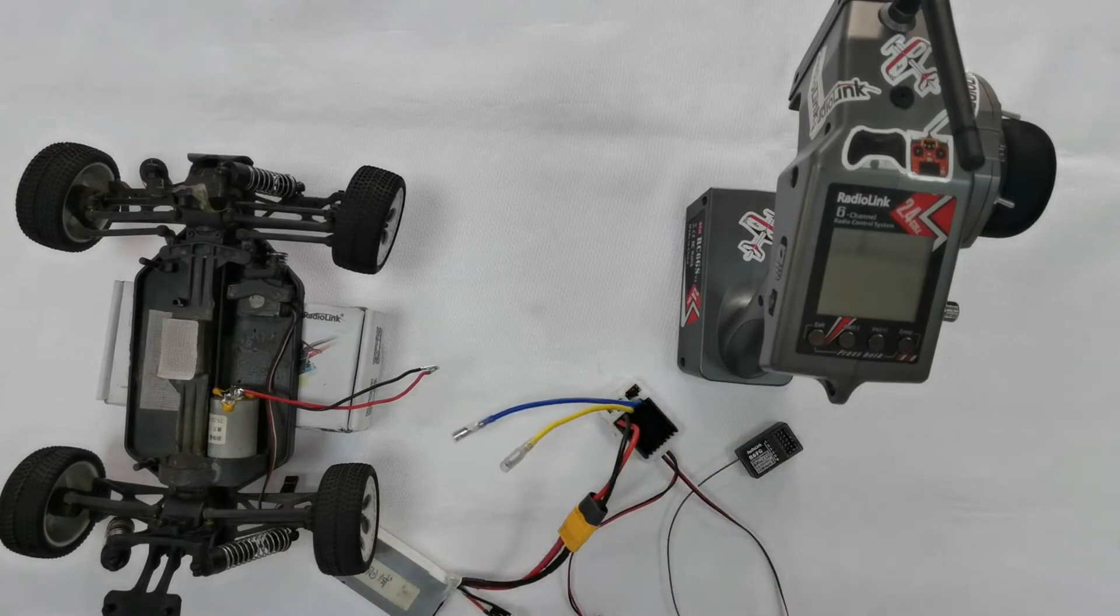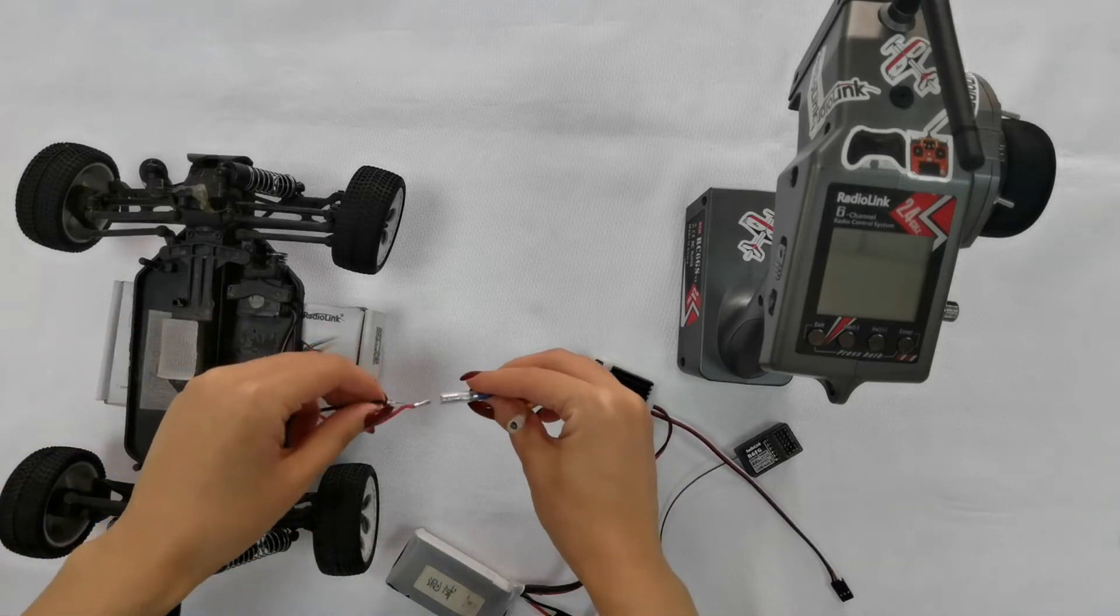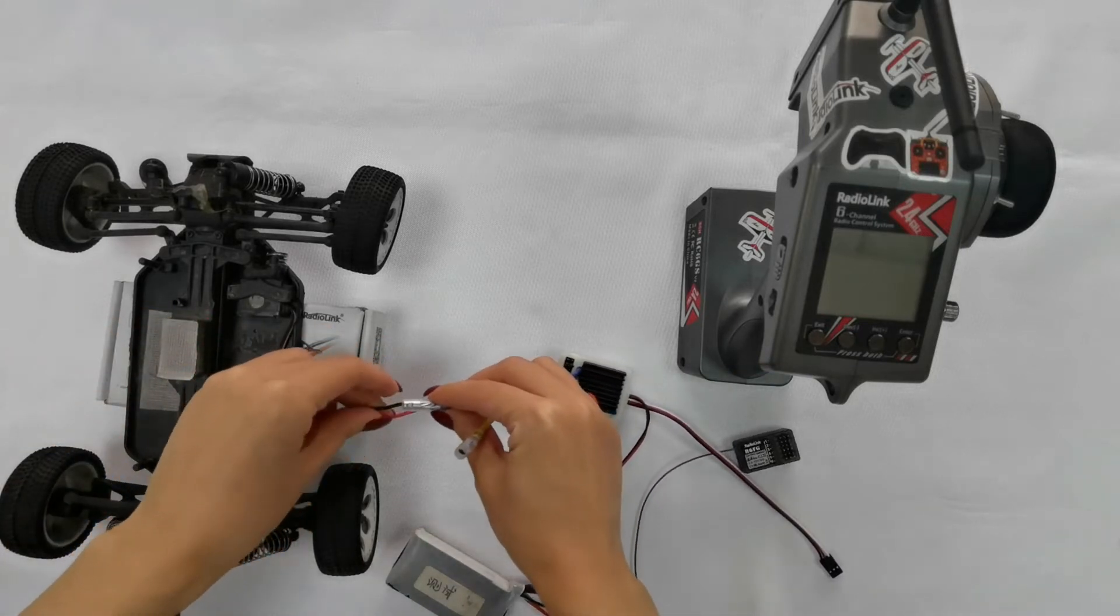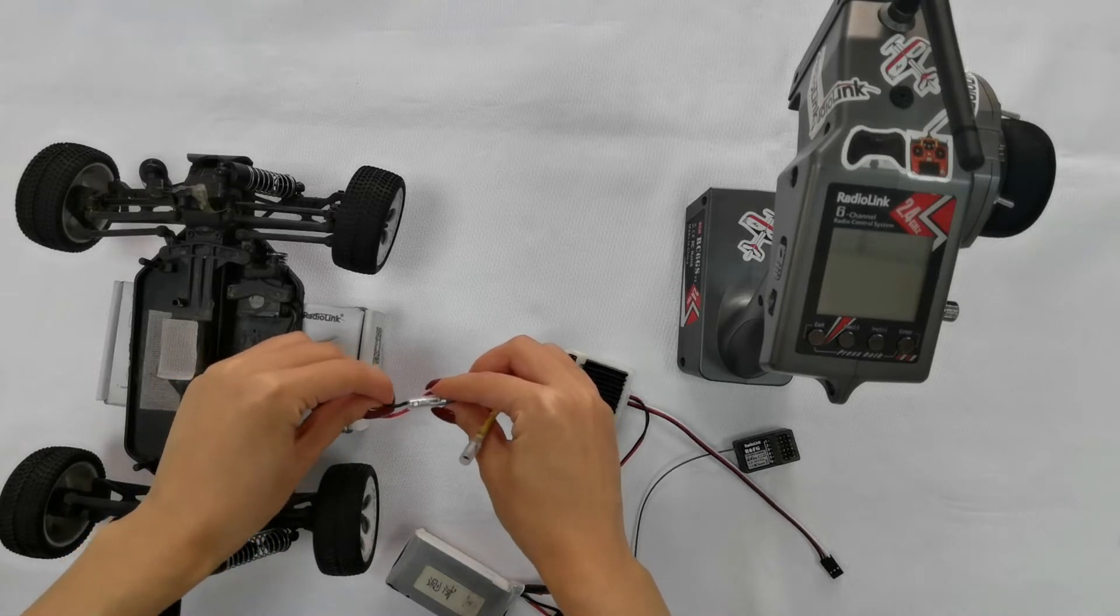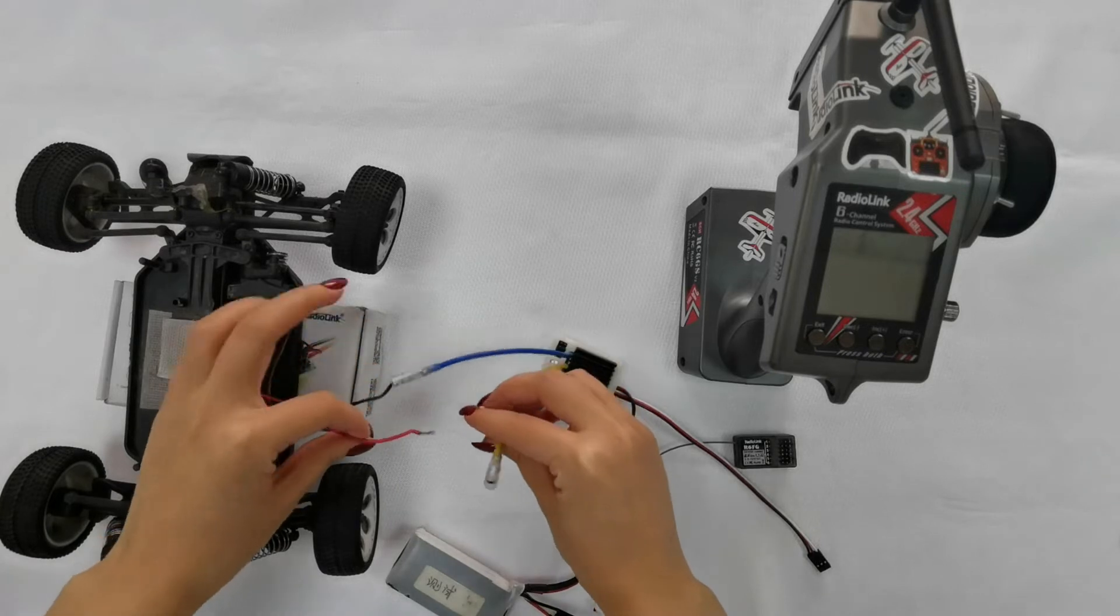Connect a brushed DC motor. COOL 9030 is a brushed DC ESC, so it only works with brushed DC motors.